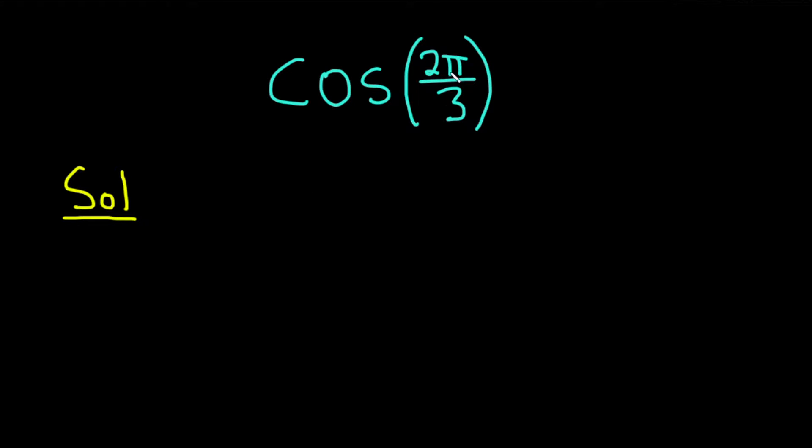The first thing you want to do is give a rough sketch of the angle 2π over 3 and find its reference angle. So this is 0, this is π, which we're going to think of as 3π over 3 because we're trying to think about where 2π over 3 is going to be.